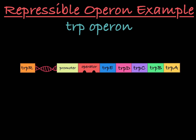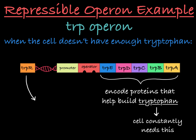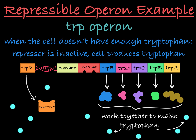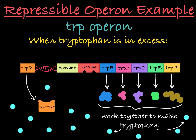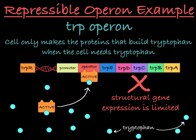An example of a repressible operon is the trp operon in E. coli. The operon contains genes that encode proteins that help make tryptophan, an amino acid that the cell constantly needs. Naturally, this operon's repressor is inactive, and the operon's structural genes are expressed, resulting in the production of tryptophan. When there's an excess of tryptophan in the cell — either due to overproduction within the cell or availability in the environment — the tryptophan binds to the repressor, making it active. This means the repressor can block transcription of these genes and prevent the cell from making more tryptophan that it doesn't currently need. The cell is saving energy and resources by limiting gene expression to only the times when the cell is in need of the product of the genes.